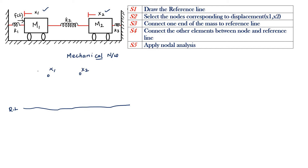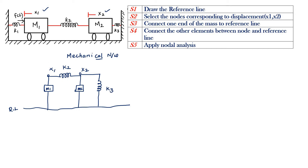X1 corresponds to the mass M1. I am going to draw the mass M1. Mass M1 is drawn between the reference line and the node. Next, I am going to draw mass M2. Mass M2 is drawn between the reference line and node X2. Between X1 and X2, we have the spring K2. And between X2 and the ground reference, we have K3. And between X1 and the reference, we have the force F of T.